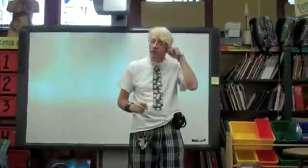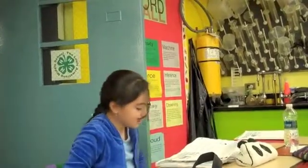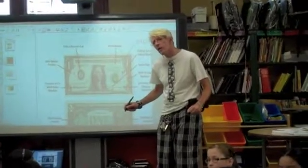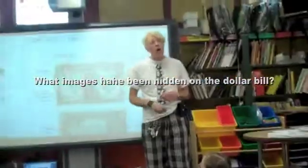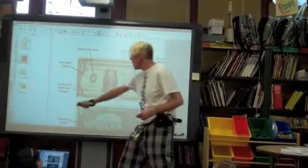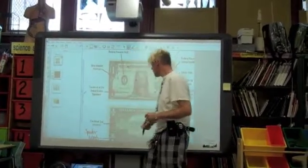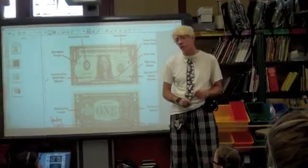What did you not know was there? I didn't know there were tiny little letters at the bottom of the president that said 'Washington D.C.' There are many things on a dollar bill that are hidden all over it. Why did they hide that? It makes it harder to copy. Yes — it does make it harder to copy when there are a lot of pieces of information hidden there.